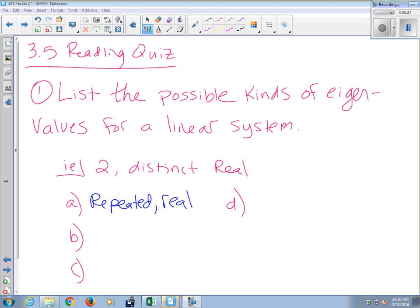You could have a repeated real eigenvalue. You could have two complex, like A plus or minus BI. What else could you have? Imaginary? Or just complex? You could have purely imaginary, like plus or minus BI. And then, zero.